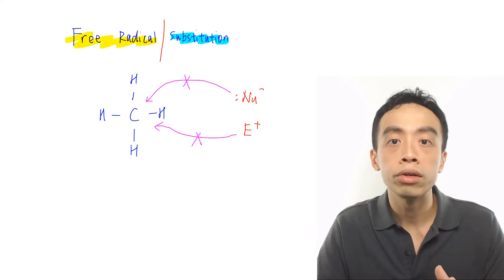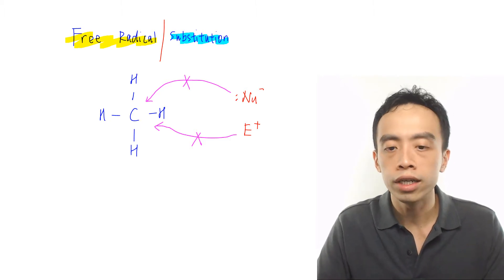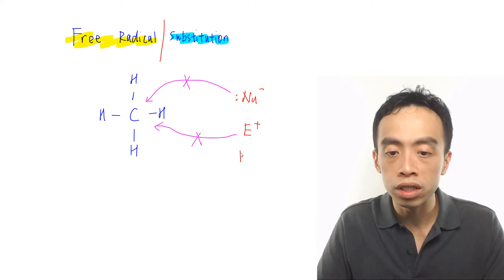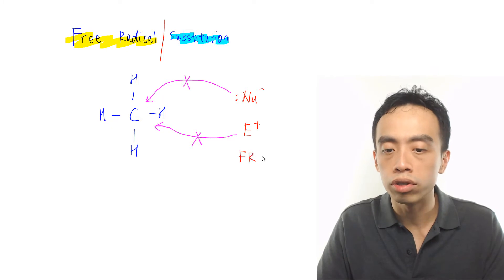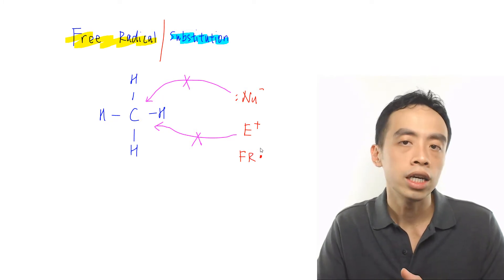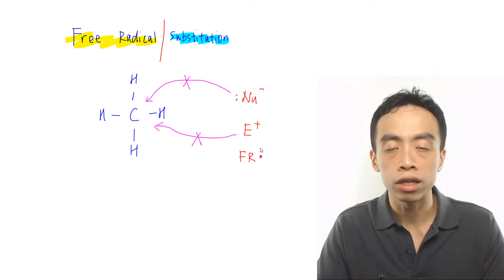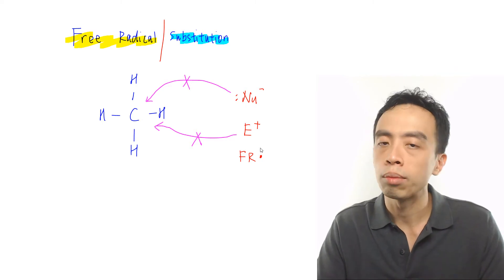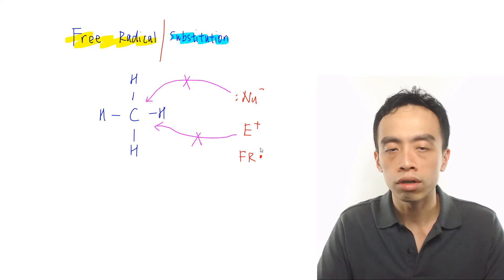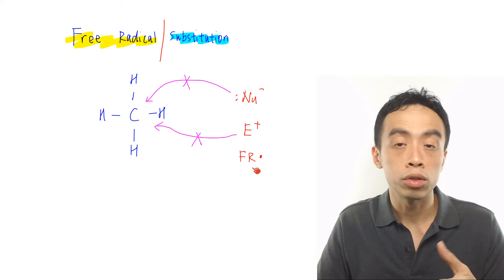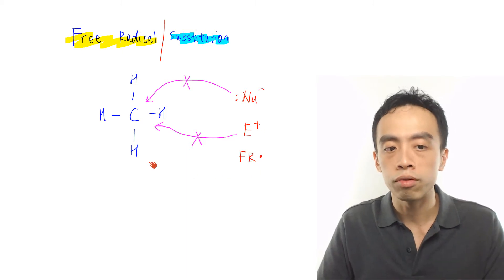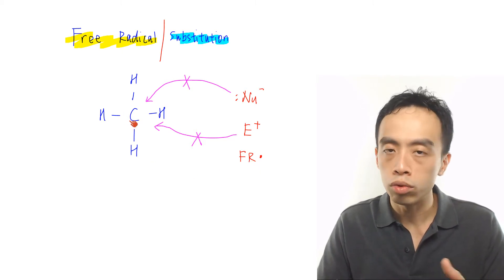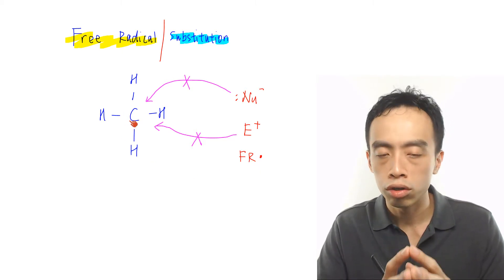So the only species that's willing to react with my alkane will be my free radical. Usually we use a dot to represent that it is neutral and has an odd number of electrons. So therefore, my free radical is very reactive and it is willing to react with my alkane, which is neutral.